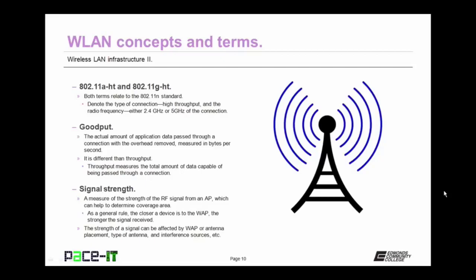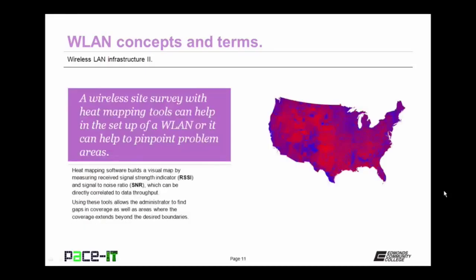Then we have signal strength. It's a measure of the strength of the radio frequency signal that comes from an access point, which can help determine the amount of area that can be covered by that access point. As a general rule, the closer a device is to the wireless access point, the stronger the signal received. This strength of signal can be affected by wireless access point or antenna placement, the type of antenna used, and interference sources that may be present. A wireless site survey with heat mapping tools can help in the setup of a high quality wireless local area network, or it can help you pinpoint problem areas.